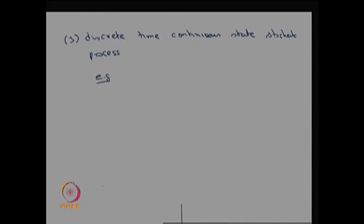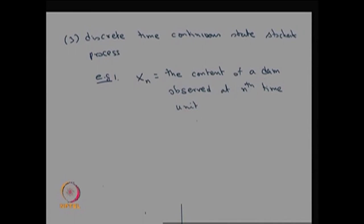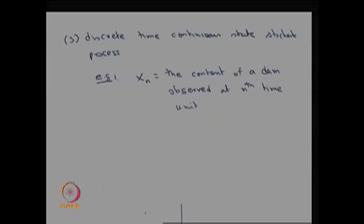Let us create an example for that. X_n is a random variable that denotes the content of a dam or water reservoir observed at the nth time unit. The time unit could be every one hour, every day at a fixed time, or weekly once. At the end of each nth time unit, you observe what is the content of the dam.